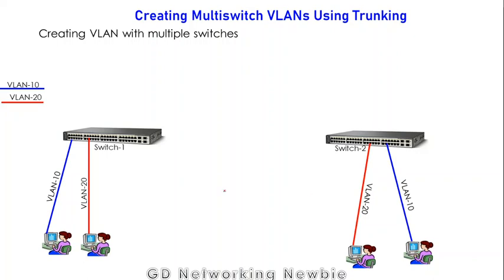To illustrate the idea, I have shown two switches — switch one and switch two. On switch one, one computer is a member of VLAN 10 and a second computer is a member of VLAN 20. On switch two, one computer is a member of VLAN 20 and the second is a member of VLAN 10. So on each switch we have two VLANs, and VLAN 10 is a member of both switches.